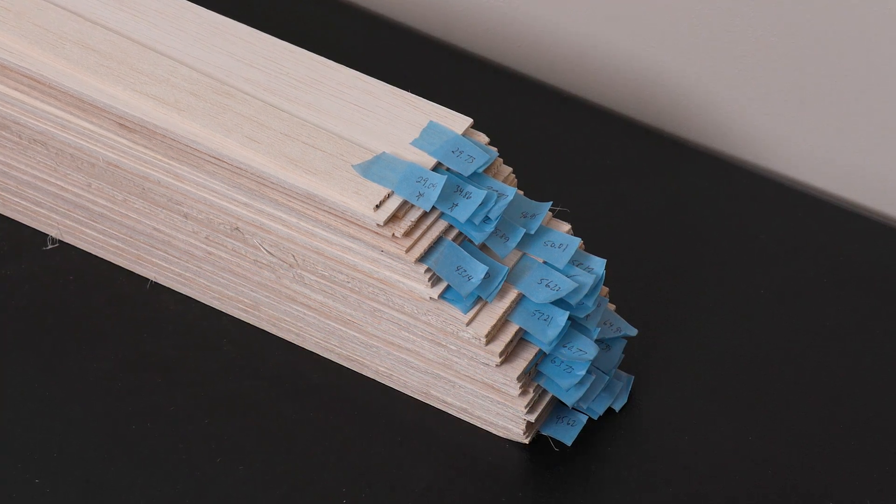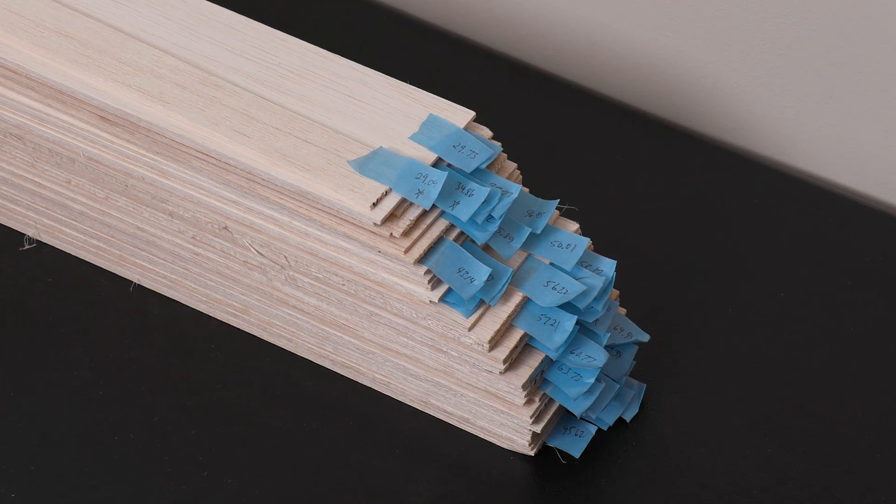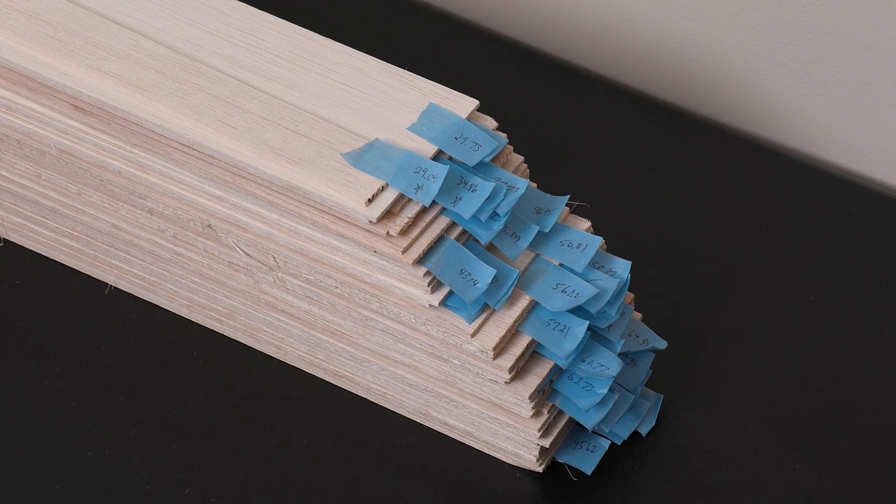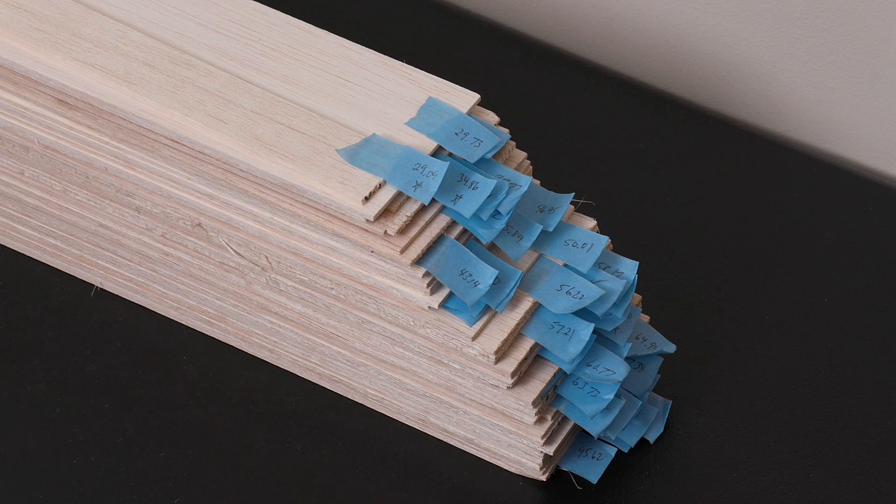So how are we going to get exactly 1.15 gram legs? Well, I have all these 1/8 inch thick balsa sheets and it's easy enough to weigh them. Here they all are in order from lightest to heaviest. With some simple math, we should be able to pick out the correct sheet to use.